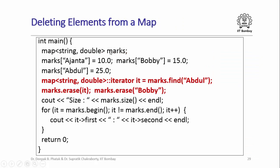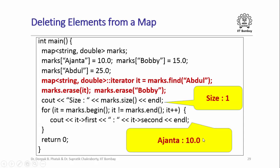To delete elements from a map, use the 'erase' member function. For example, you can get an iterator pointing to the key-value pair where the key matches 'Abdul' using marks.find('Abdul'), then call marks.erase(it) to delete that pair. You can also erase a key-value pair by directly specifying the key value. After deleting two key-value pairs from a three-element map, the size becomes 1, and iterating the map prints only 'Ajanta 10'.